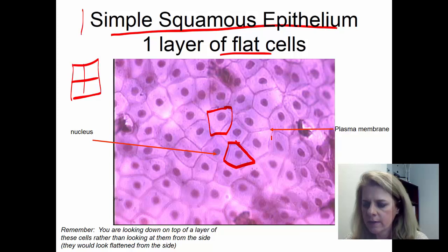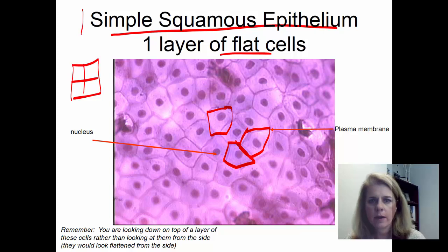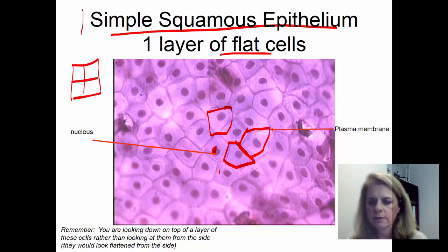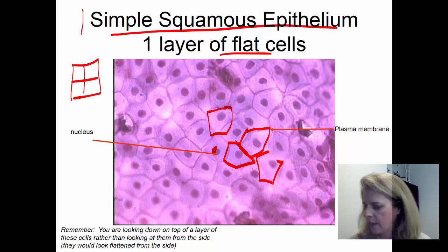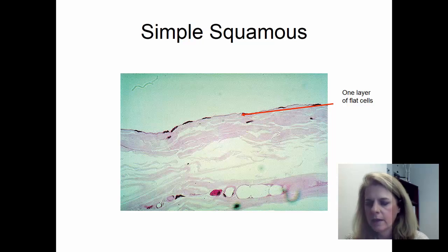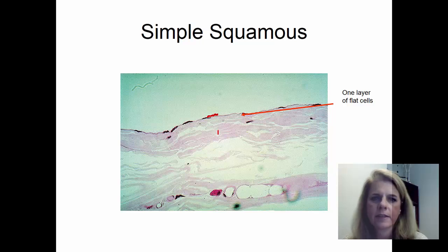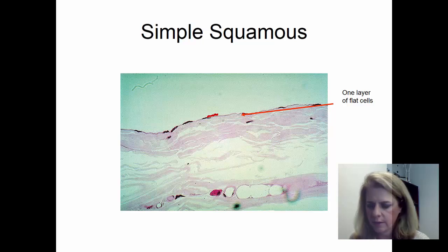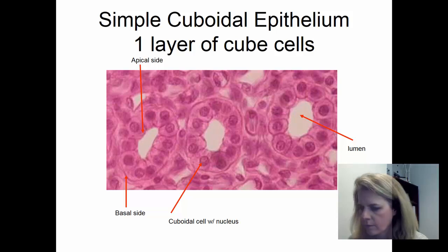If you saw this slide you would name it simple squamous epithelium. You also want to be able to recognize specific parts — this line here is the plasma membrane, which forms the boundaries of the cell. You need to be able to identify the nucleus. If you are looking at it from the side you would see one layer of flat cells. A picture similar to one of these two slides is what you'll see on your exam.